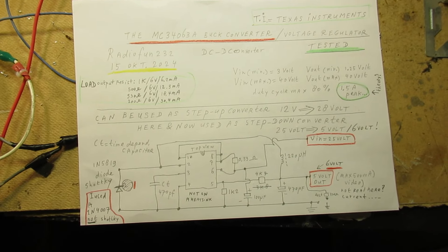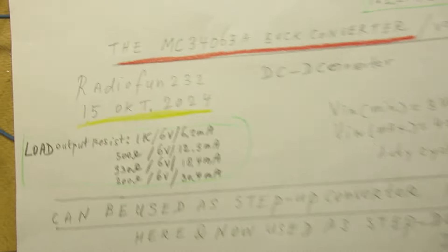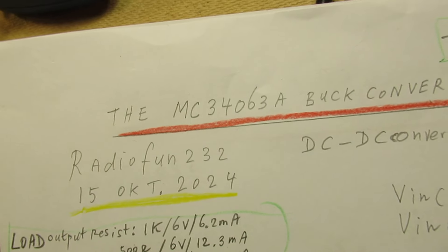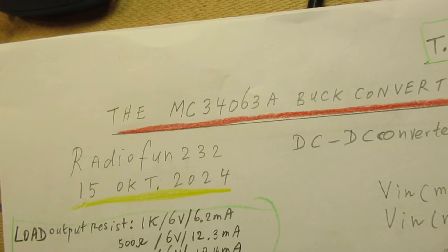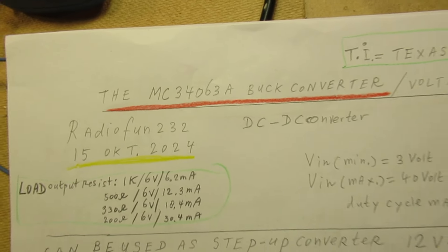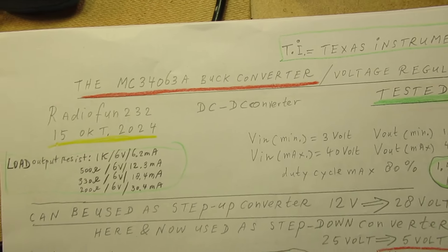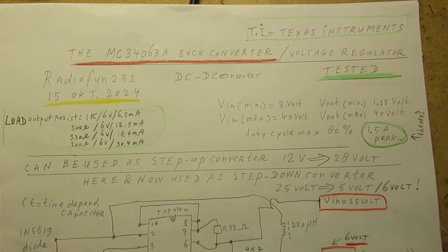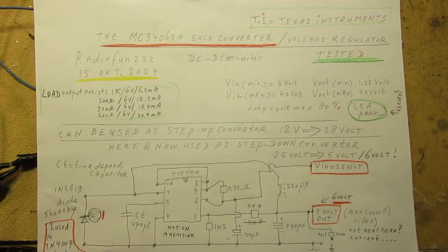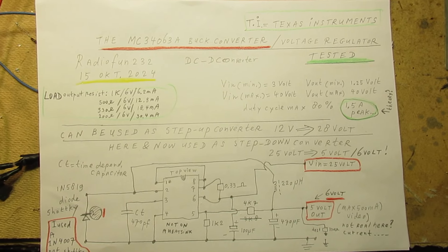Yesterday I was talking about this chip, the MC34063A buck converter, and when we look at the datasheet we can see that it can be used as a step down and a step up converter.